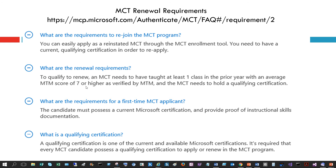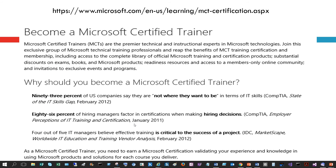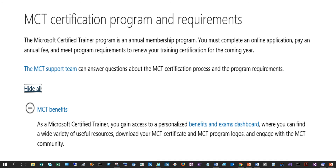Here are the MCT renewal requirements. To qualify to renew, an MCT needs to have taught at least one class in the prior year with an average MTM score of seven or higher, as verified by MTM — though this requirement has been modified, so check the website for the latest. For first-time applicants, you must possess a current Microsoft certification and provide proof of instructional skills documentation. For details on why you should become a Microsoft Certified Trainer, visit microsoft.com/en-us/learning/mct-certification.